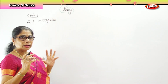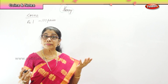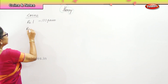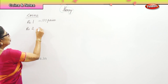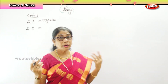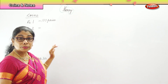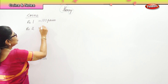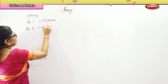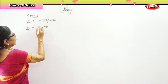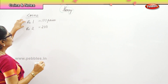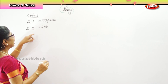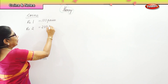Then we have a five rupee coin and we have two rupees. In two rupees, there are two hundred paisa, because one rupee has hundred paisa. So in the two rupee coin you find two hundred paisa.